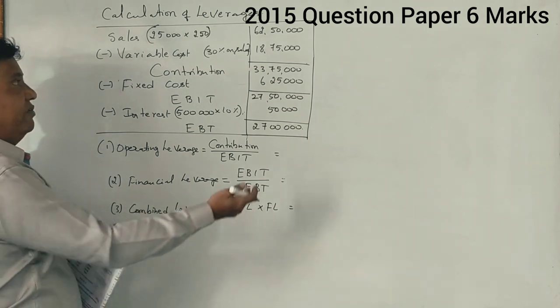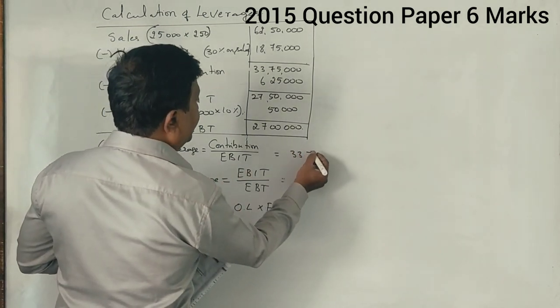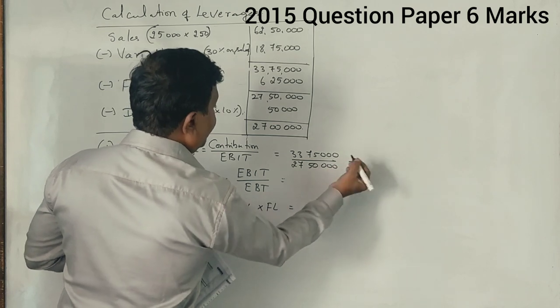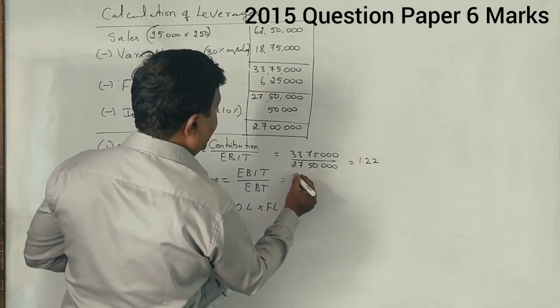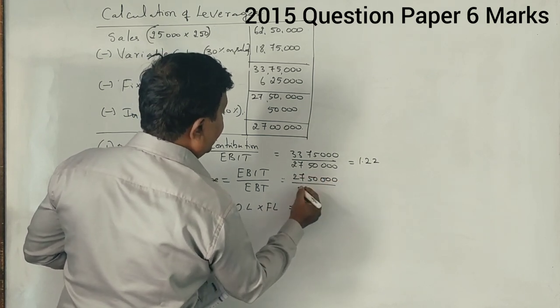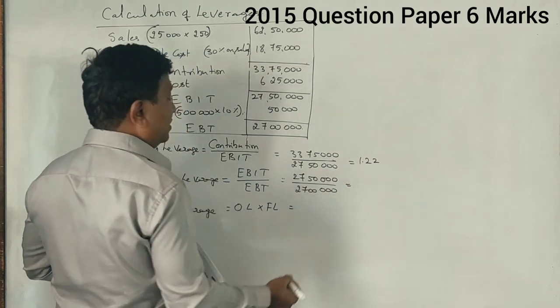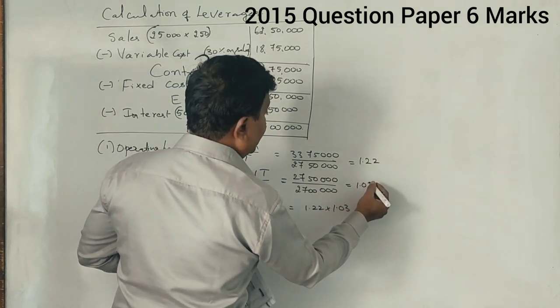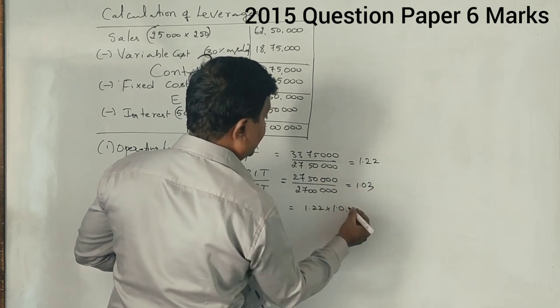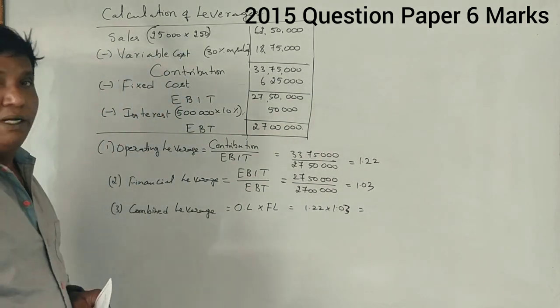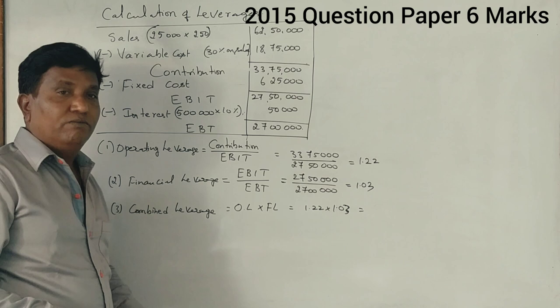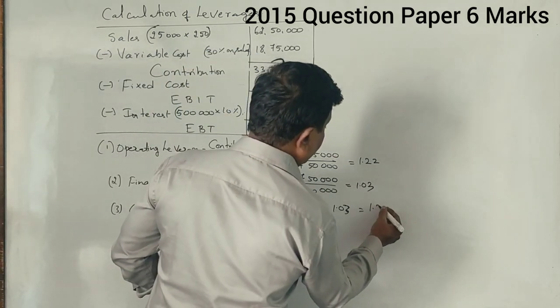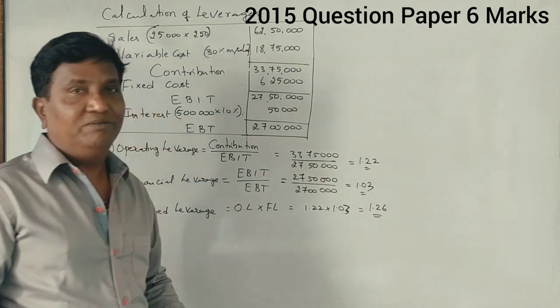Now we have to calculate operating leverage. 33,75,000 divided by 27,50,000. The contribution divided by EBIT gives us the operating leverage. After calculating financial leverage with EBIT divided by EBT, we get approximately 1.26. That's all, we have done it.